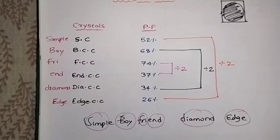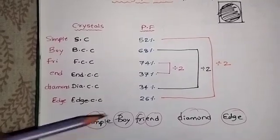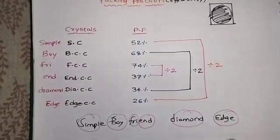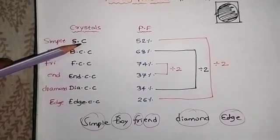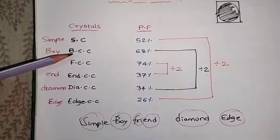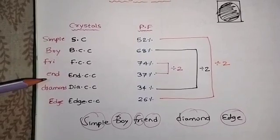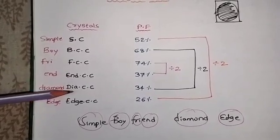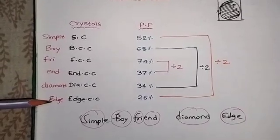For that, what you need to remember simply is that: simple boy friend having diamond edge. This is simple as simple cubic, boy means body centered, friend means face centered, end means end center, diamond means diamond centered, edge means edge center.